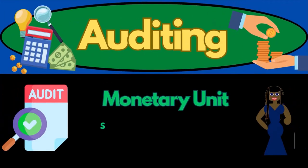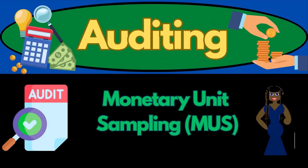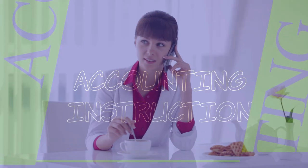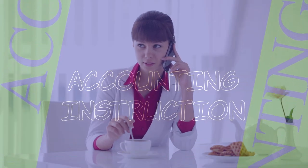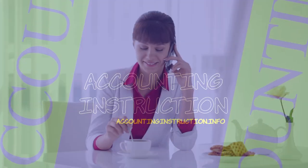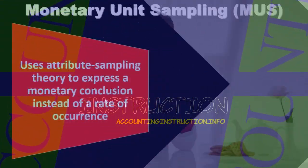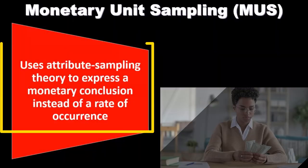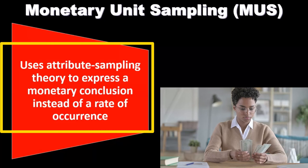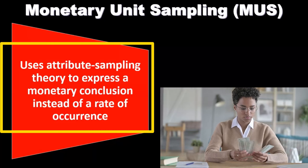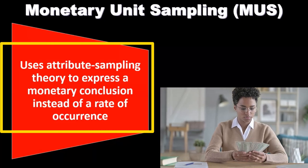In this presentation, we will discuss monetary unit sampling, or MUS. Monetary unit sampling uses attribute sampling theory to express a monetary conclusion instead of a rate of occurrence.